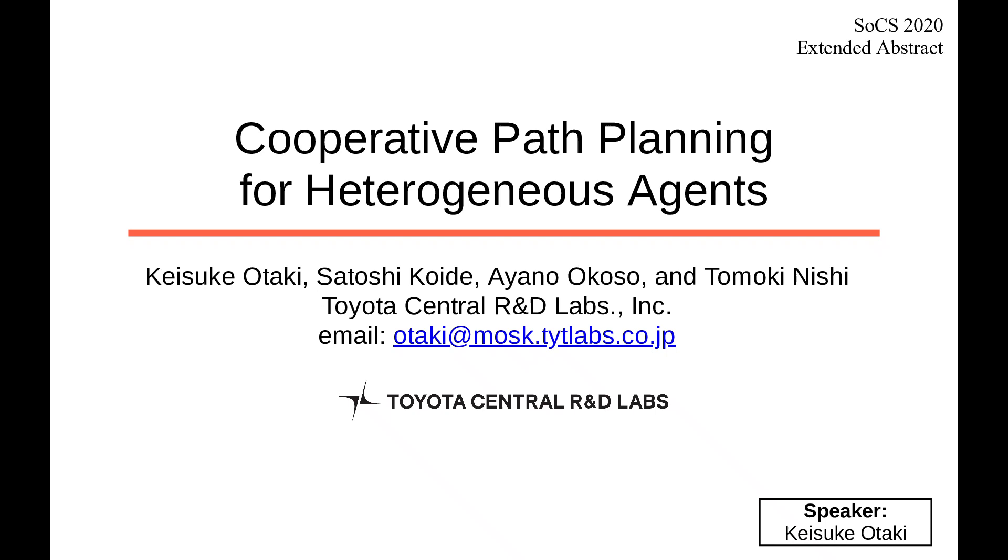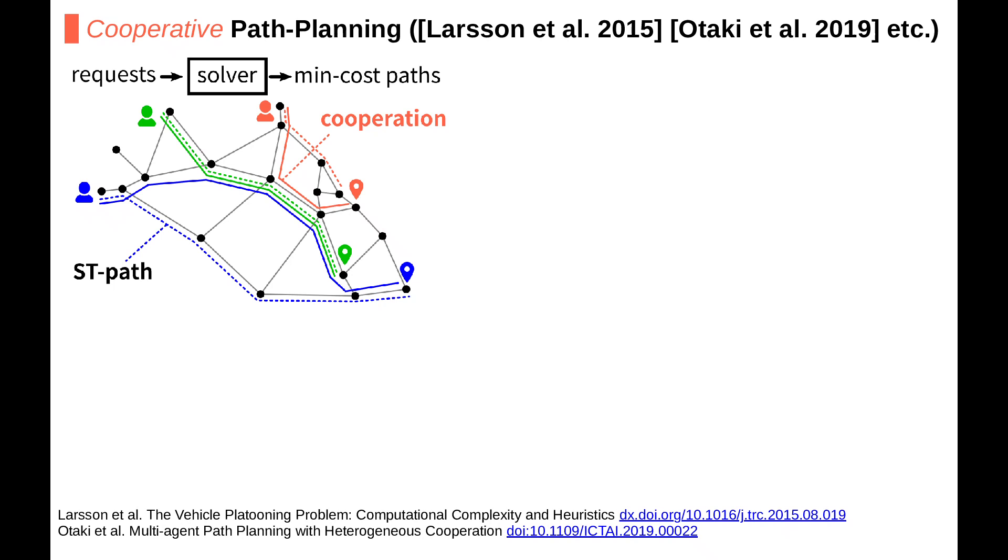Hi everyone, I'm Keisuke Otaki. Today I'll explain our recent work on a path planning problem class called cooperative path planning. Let's see the first figure. The input of the problem is a set of requests on a graph. The output is the set of paths that minimize some objective function.